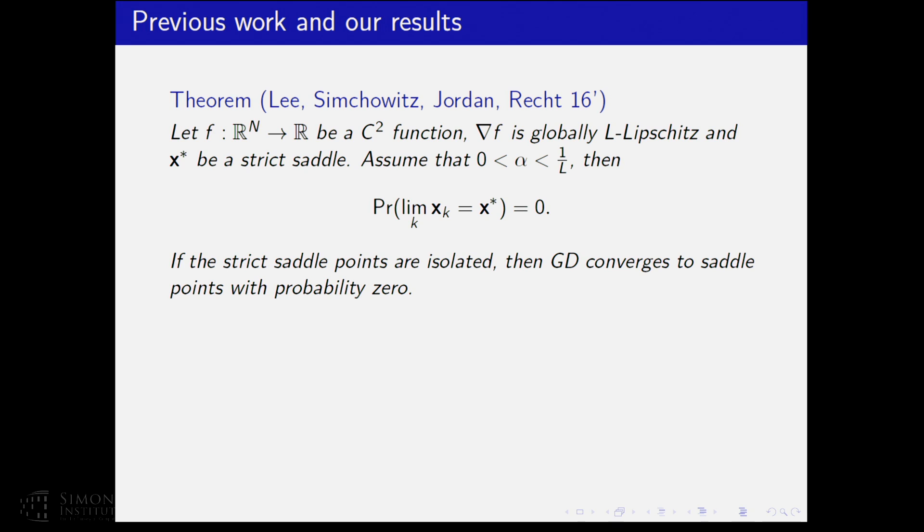So, recently, Li, Simovic, Jordan and Recht proved this very nice theorem. It says the following that if you have a function f which is smooth and it is globally L-Lipschitz, then the probability that the gradient descent converges to a strictly saddle point is zero. A probability measure has to be absolutely continuous with respect to Lebesgue measure in R^N. And by an easy union-bound argument, you can show that gradient descent, with probability zero, converges to strictly saddle points if they are isolated. And you can do a union-bound argument because if the strictly saddle points are isolated, then they are countably many, at most, finite or countably many. So, you can use a union-bound argument.